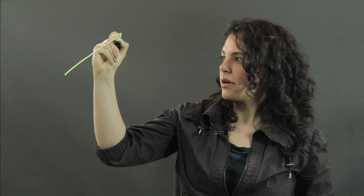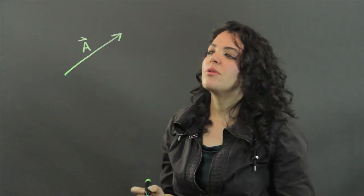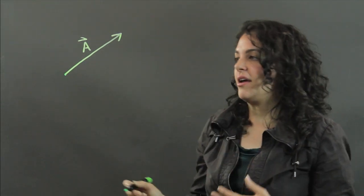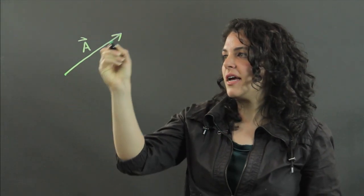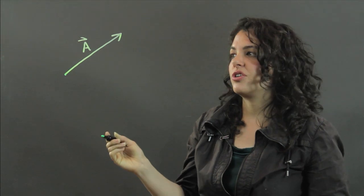I'm going to draw a vector. I'm going to call it vector A. And we want the magnitude in the end, so we're just really looking for the length. We're not concerned with the direction of this vector.